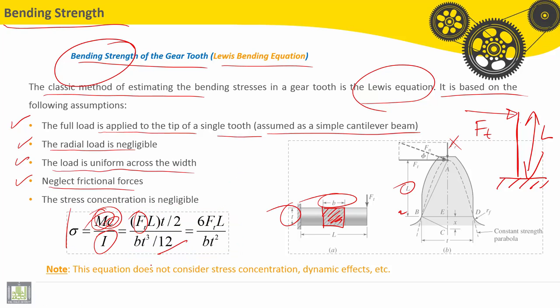Finally, sigma is equal to 6FT times L, the tangential force times L, this distance, height of the tooth, divided by Bt cubed. Note, this equation does not consider stress concentration, dynamic effects, etc.